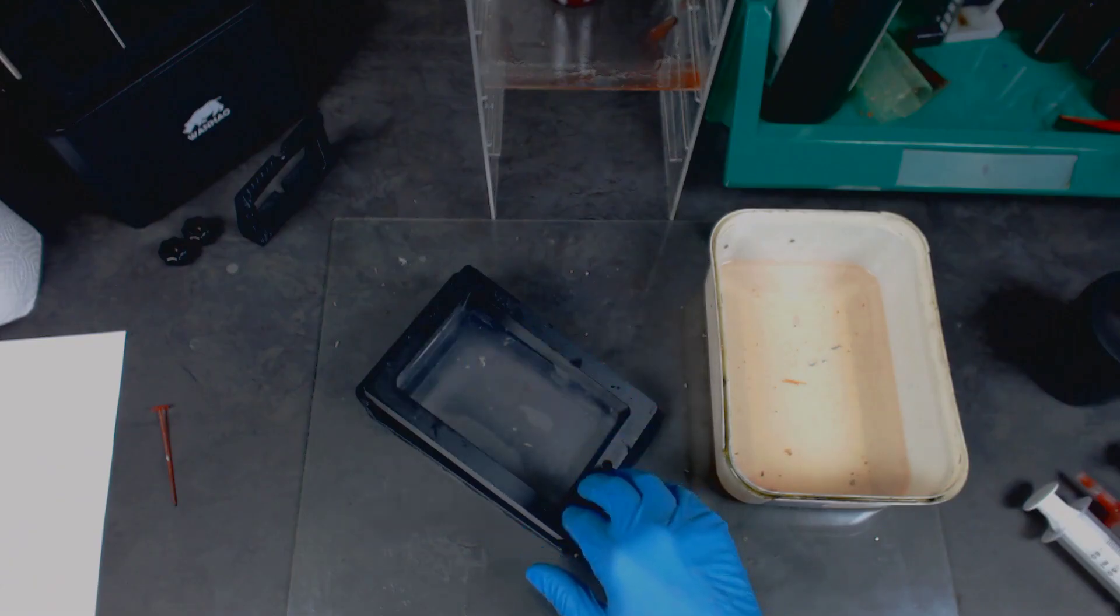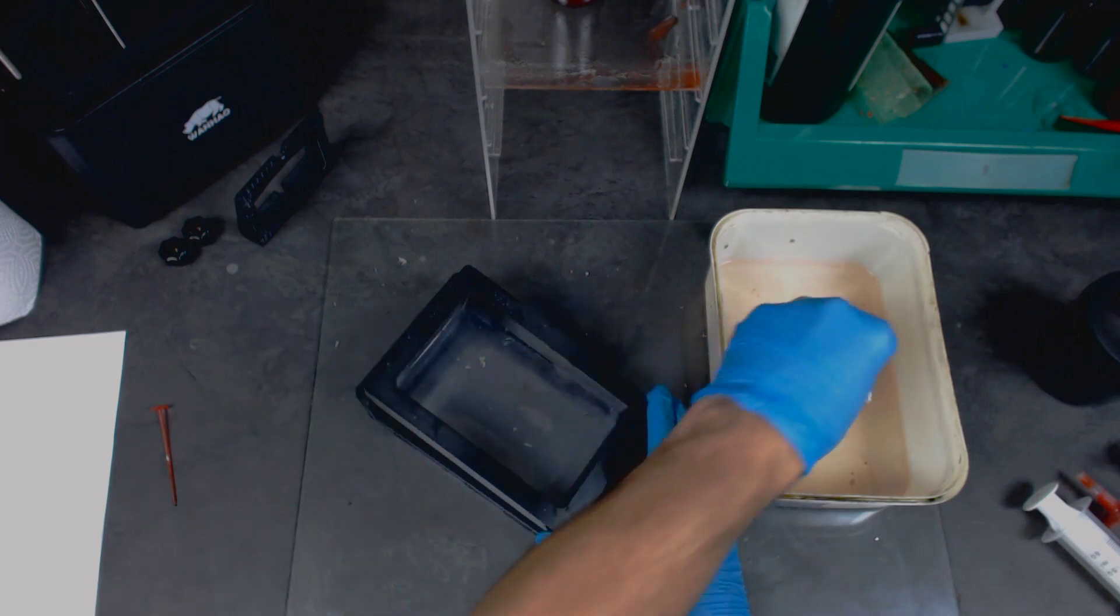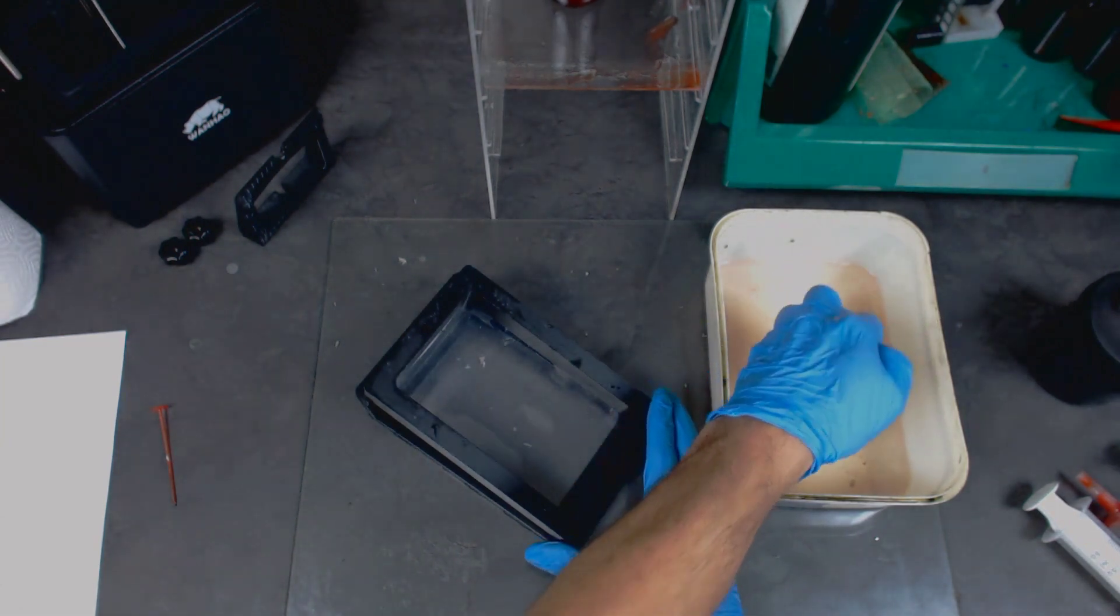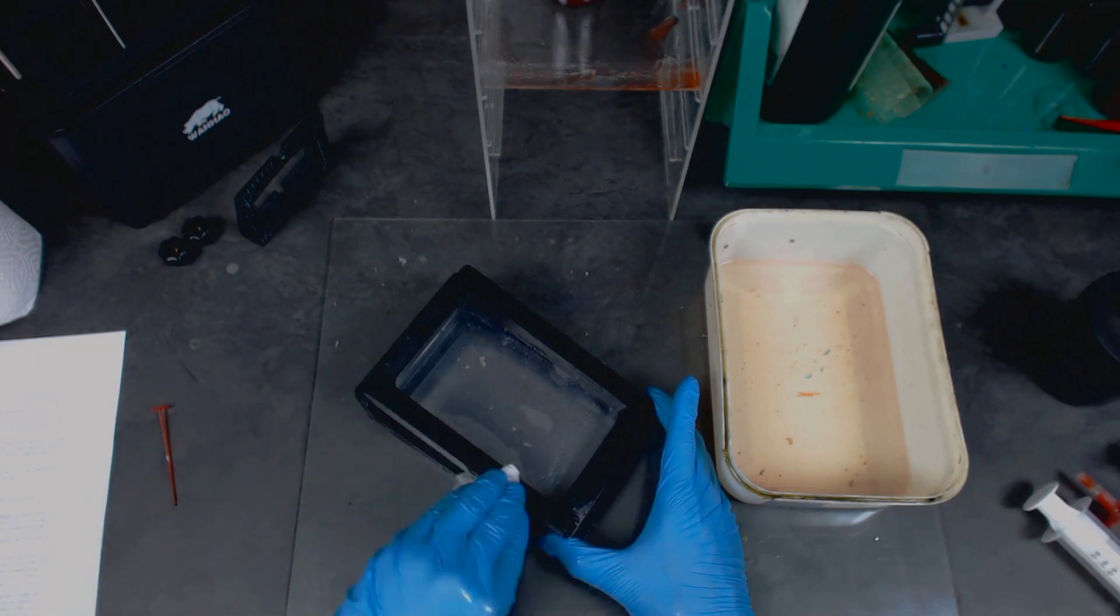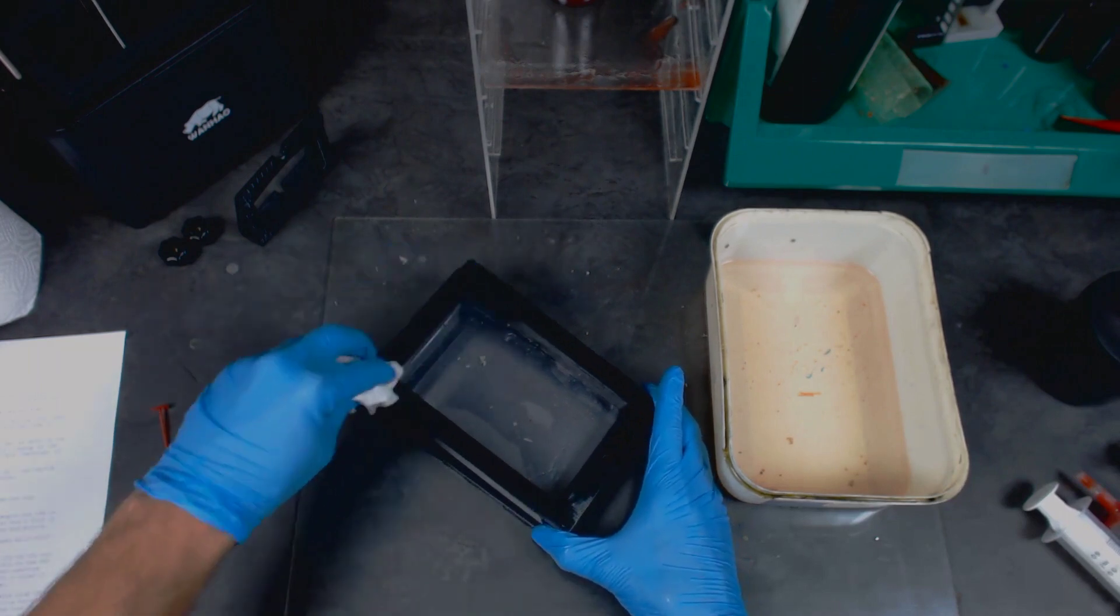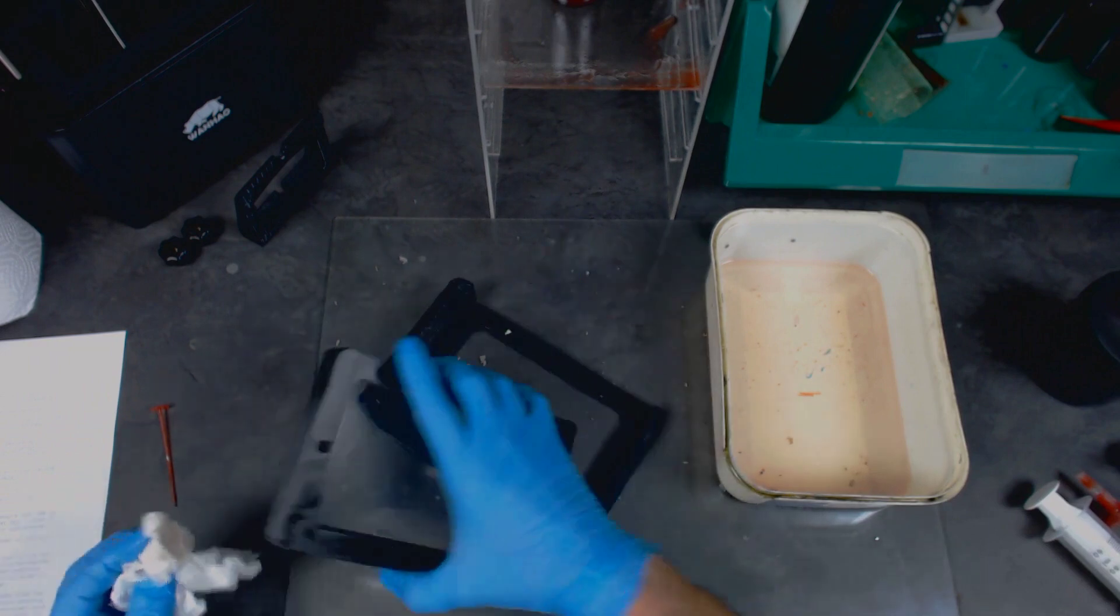All of that done, you need to clean out any remaining resin from the vat. I don't like to use IPA to clean inside as it makes the FEP go milky and that results in bad prints. Whatever you do though, don't use a scraper as that'll definitely mark or scratch or cut the FEP.